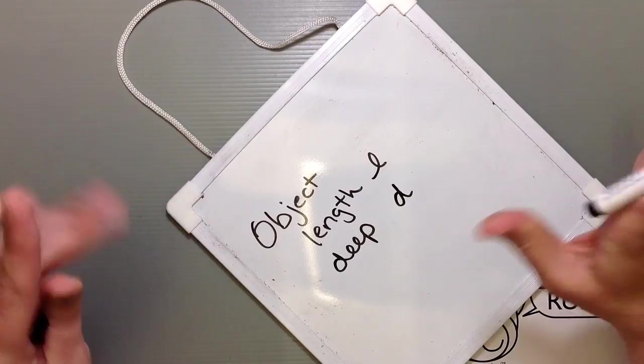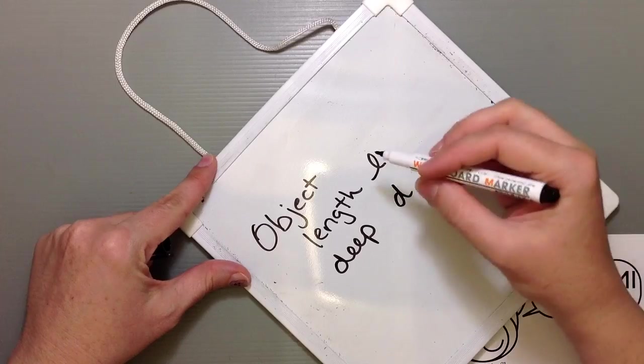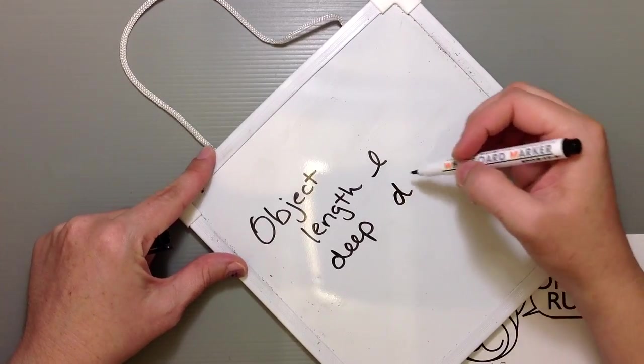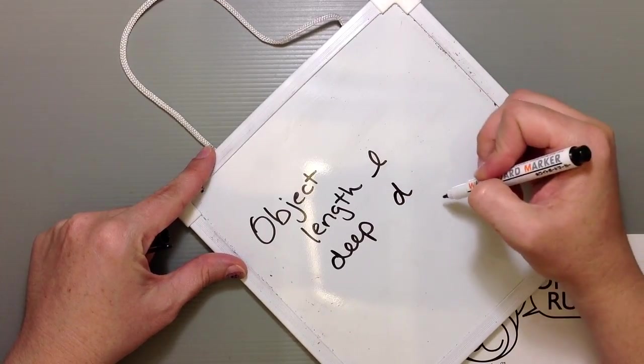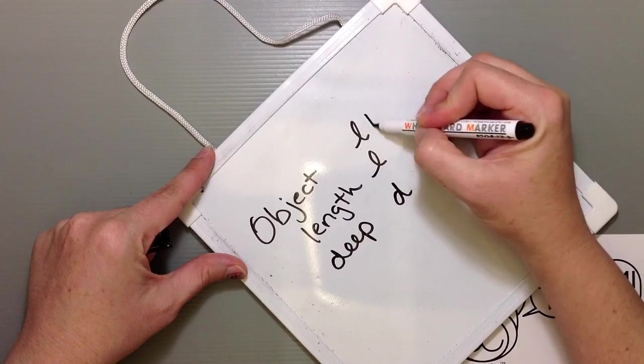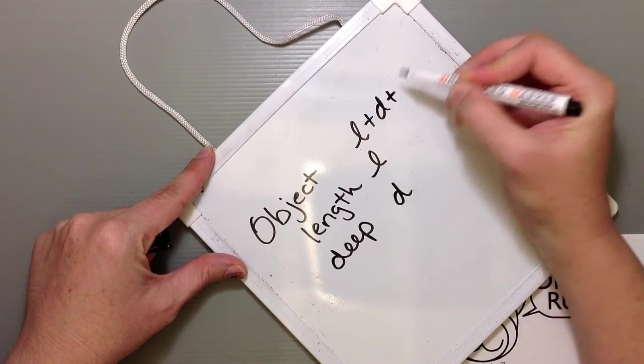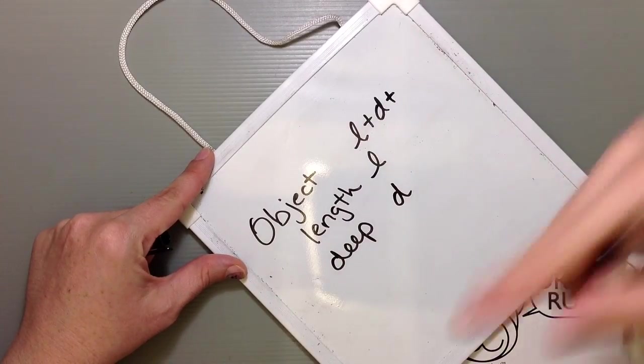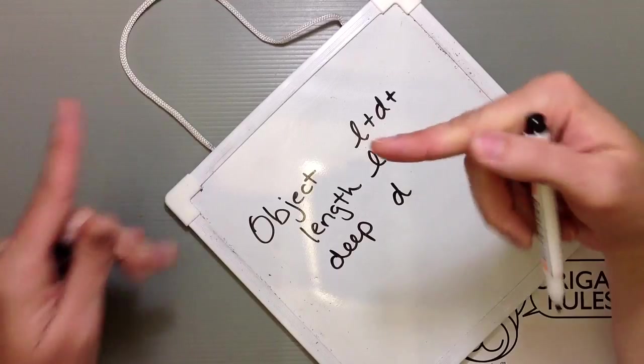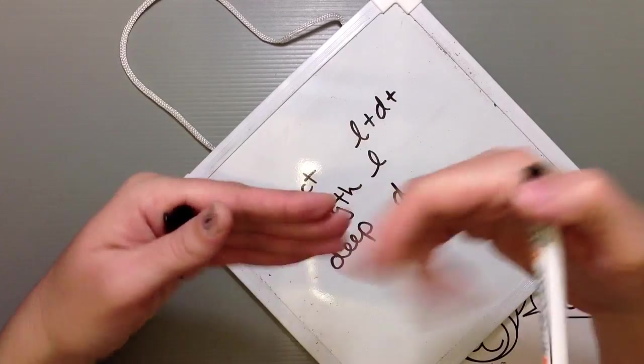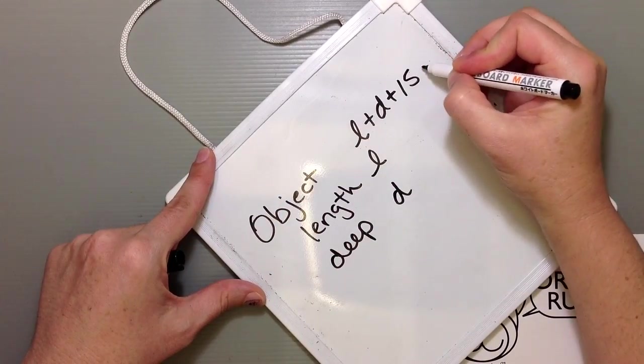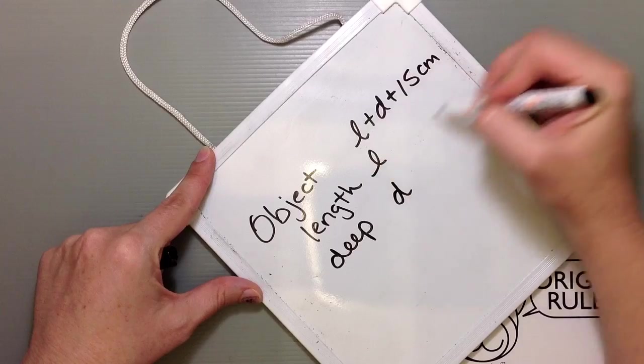We're getting into algebra—I don't want to scare you guys away, I'm sorry. But you do want to consider those two numbers. You want to add those two together and then give yourself a little extra for the top so that you can consider how you're going to fold things down and with the depth so that you can overlap just a tiny bit. I like to give myself at least 15 centimeters. So that's the first thing to consider. This is how long your paper should be.